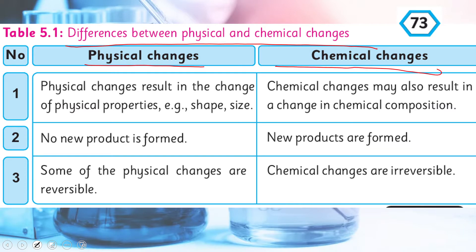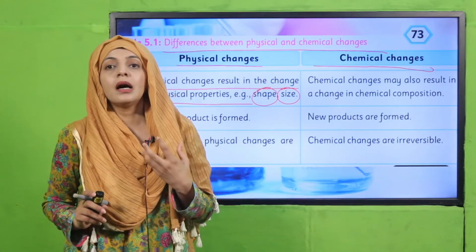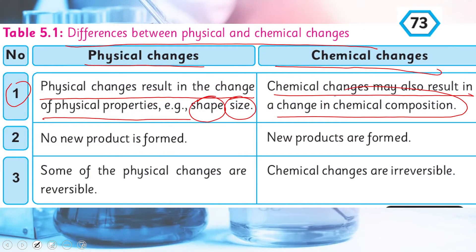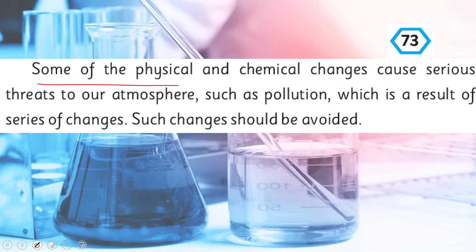Physical changes result in the change of physical properties, for example shape and size — physical change sirf uski physical appearance ko change karta hai, koi naya product form nahi hota. Whereas chemical changes result in a change in chemical composition — matter ki composition change hoti hai aur new products are formed. Some physical changes are reversible, whereas chemical changes are irreversible — chemical changes ko dubara change nahi kiya ja sakta.